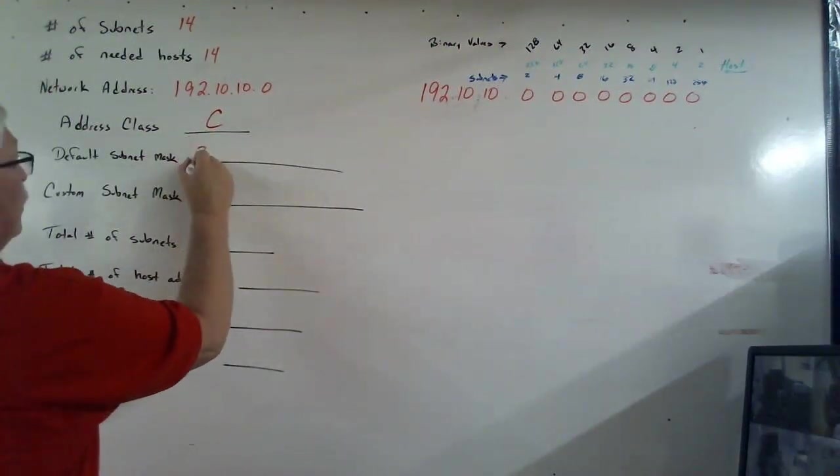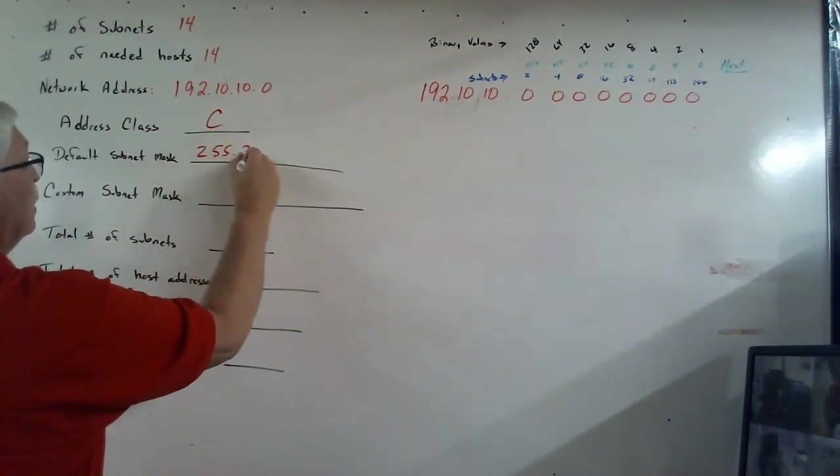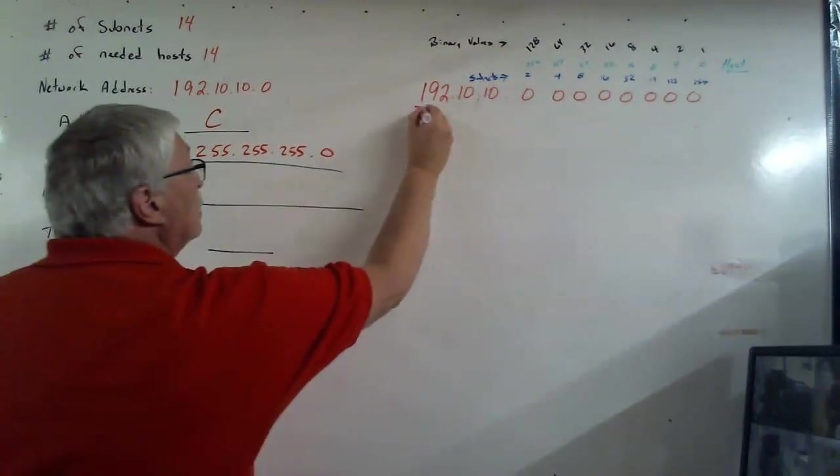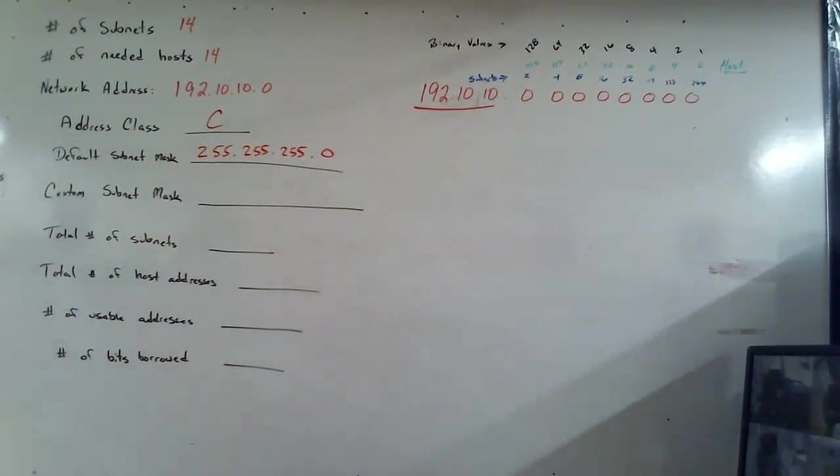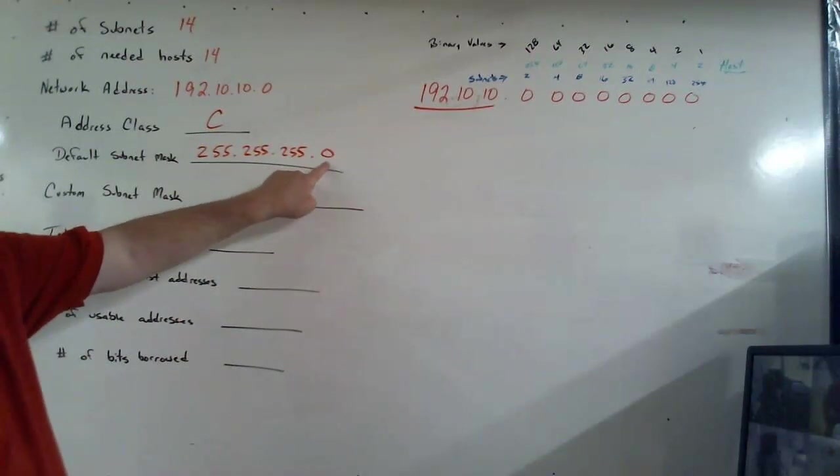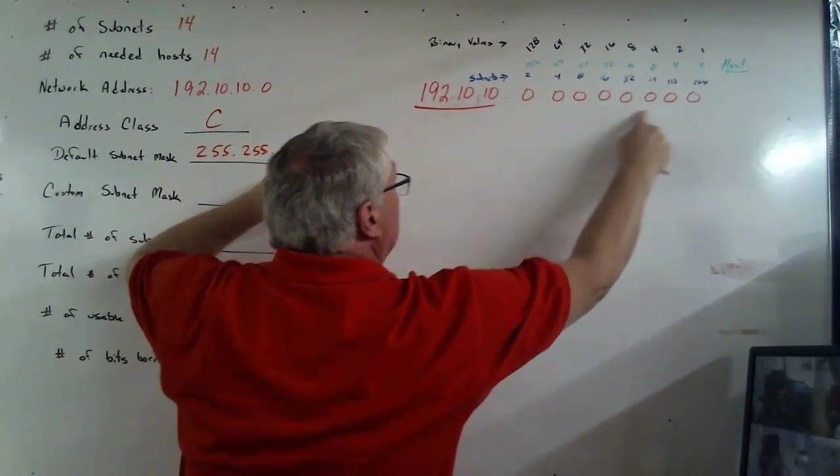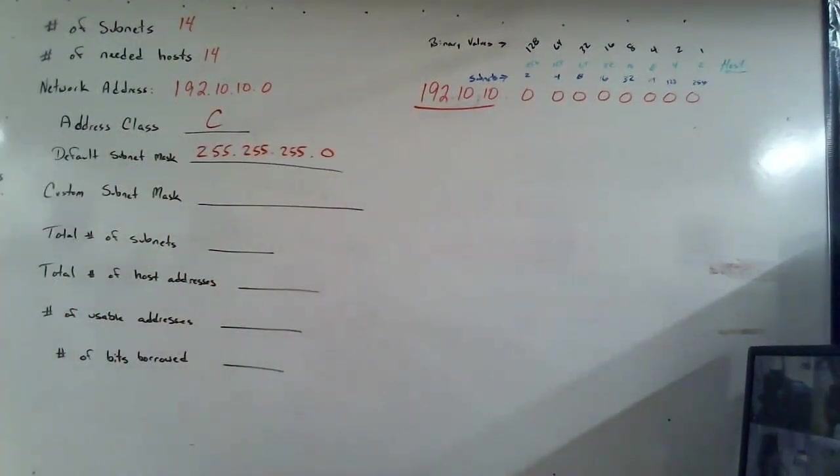We also know the default subnet mask is triple 255, which means these first three numbers cannot be touched. The only thing we can play with is this last zero, or converting it to binary, the last eight zeros that you see here in the upper right-hand corner.